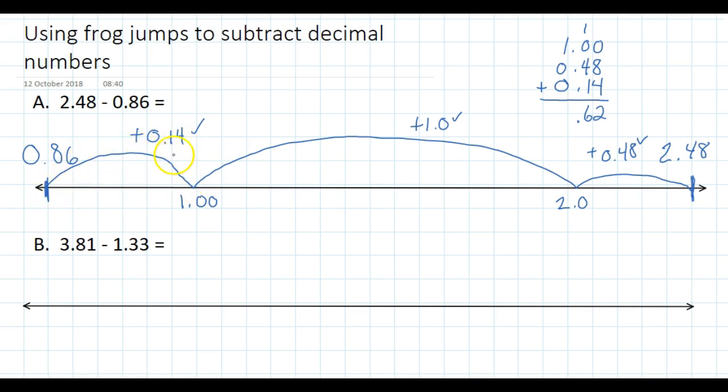So my first jump was 0.14. That takes me to 1.0. My next hop is a bigger one because it's a whole number, so 1.0 takes me to 2.0.